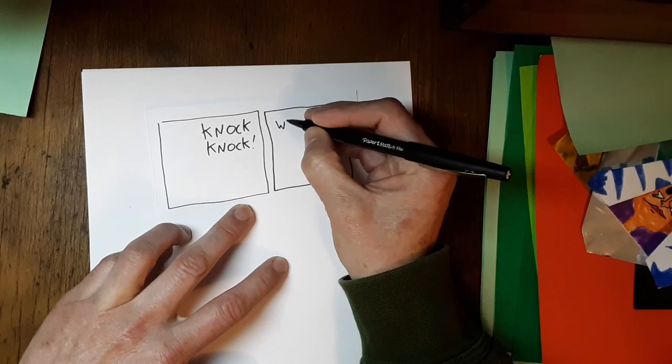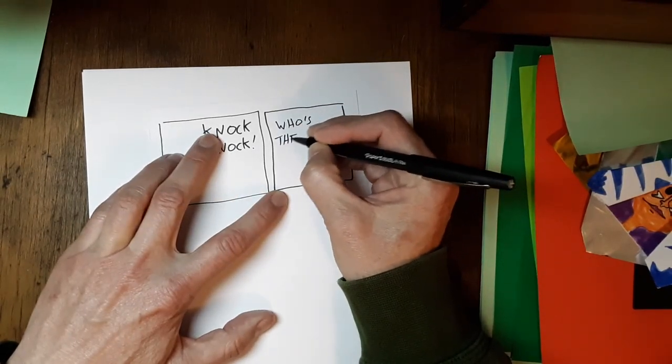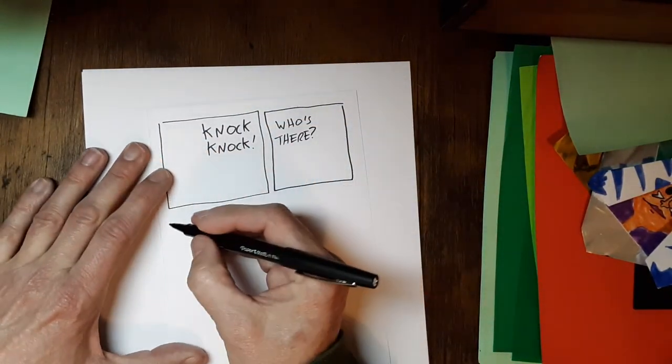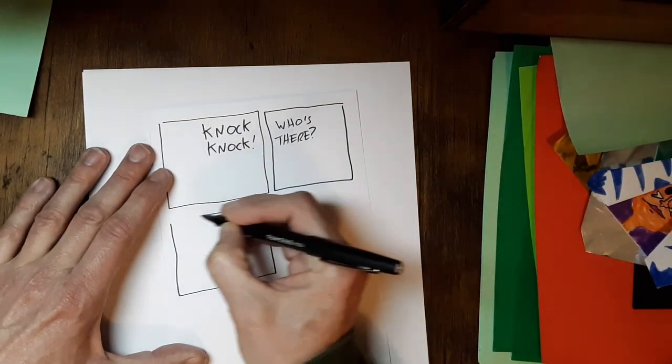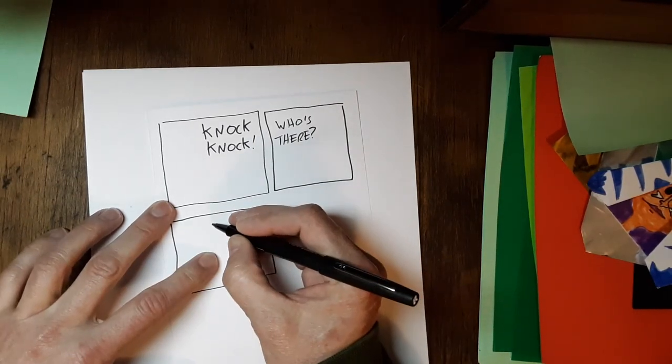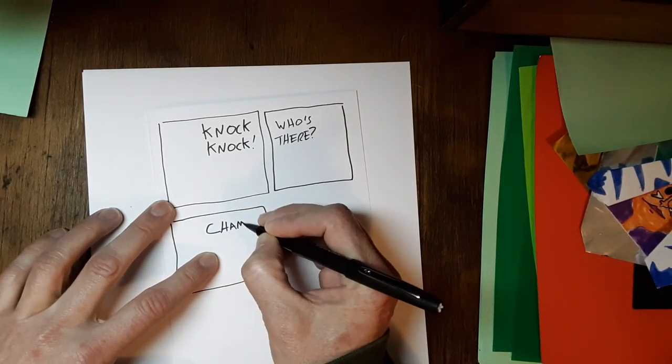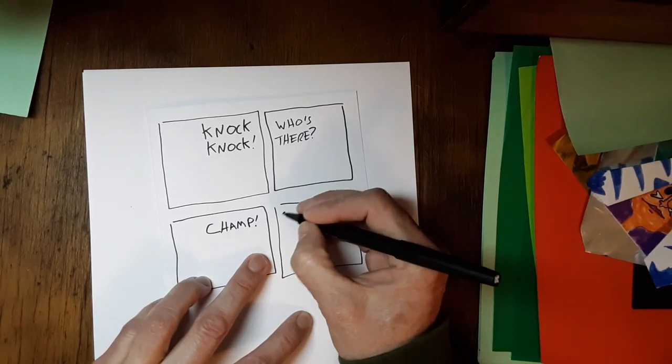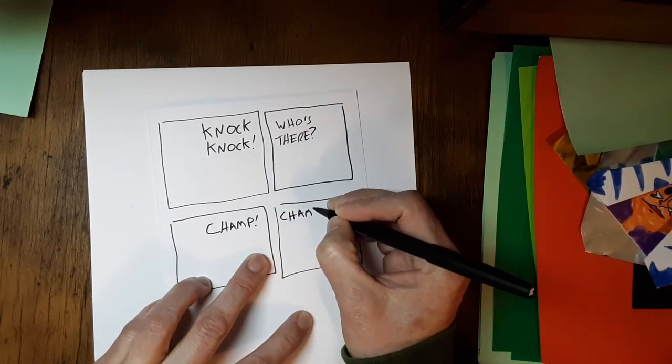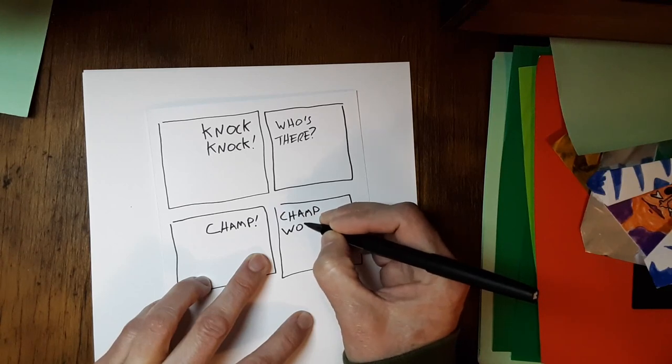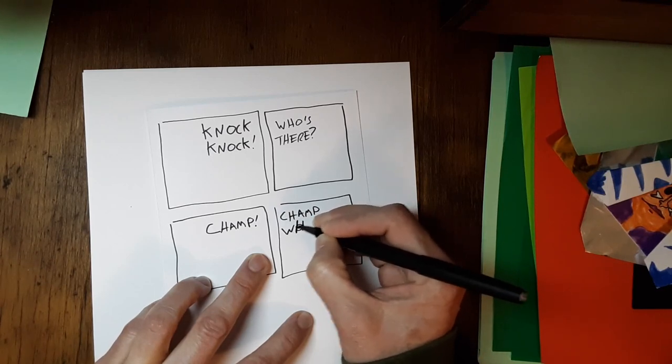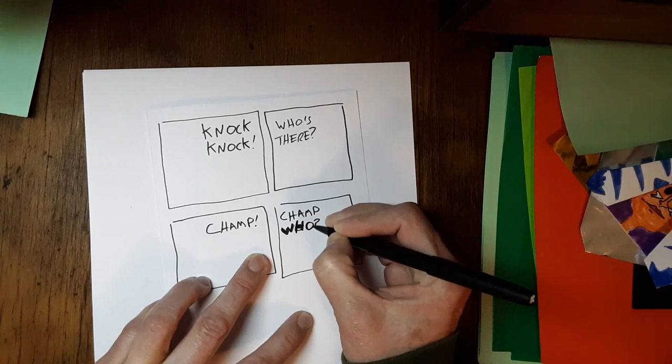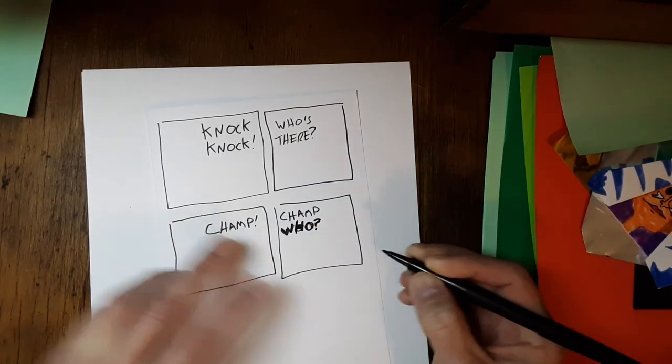And over here, somebody's going to say, who's there? Okay, so we got knock-knock and who's there? And then, as you know, next part of a knock-knock joke, this person is going to say the name. So the name here is going to be champ. So of course that means this person needs to say champ who. Oops, I've almost messed this up. I have messed this up. Champ who. We'll figure that out. We'll use some creativity to cover that mistake up. All right, there we go. This person says champ who.